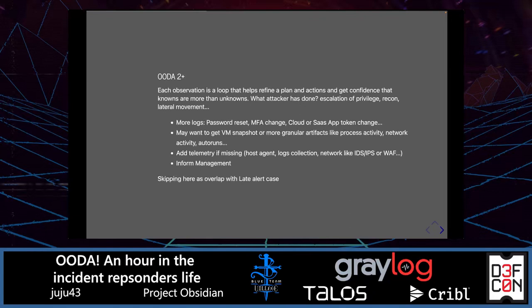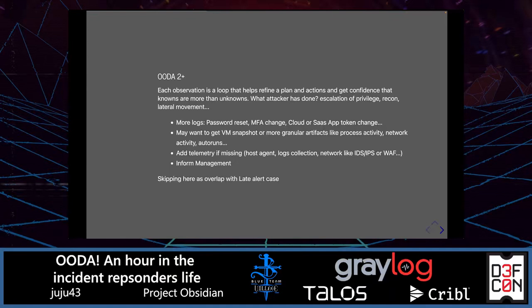For further iterations of the OODA Loop, we can check if there were password resets, MFA changes, or cloud app token changes. We may want to collect more information — be it through a VM snapshot or more granular artifact collection like process activity, network activity, or torrents. Depending on your environment, we may want to add telemetry if it's missing: host agents, log collection, or network collection like IDS/IPS. And depending on your assessment of the incident, notify management — depending on your company, that may happen earlier or later.